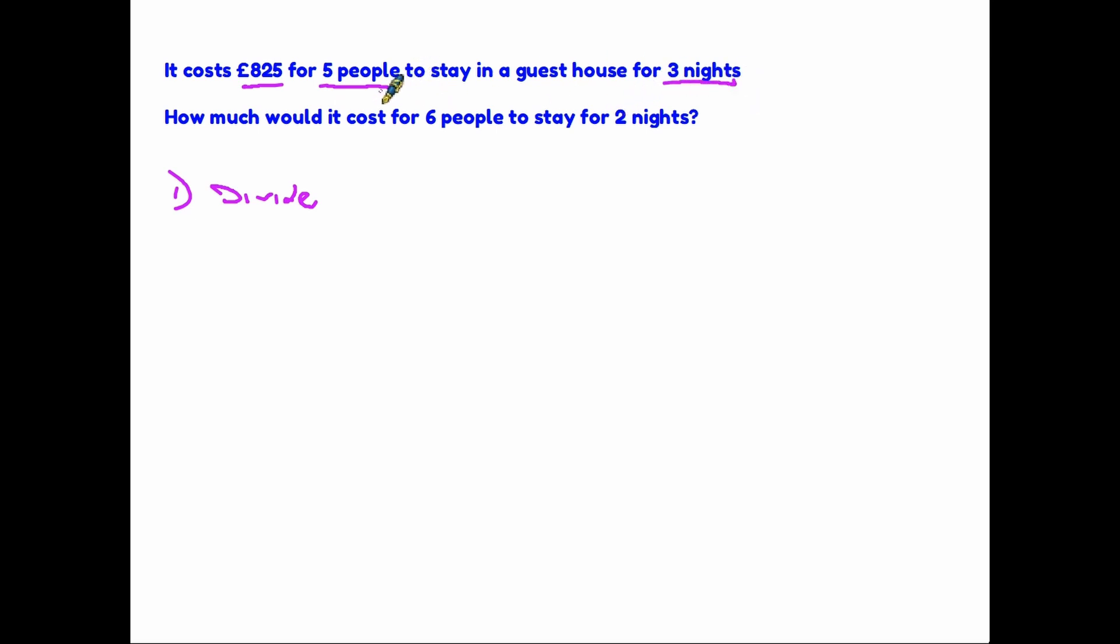But we can apply our two-step rule. Step one was divide to find one. Now, what's this one? Well, the price that we're looking for is how much it would cost one person to stay for one night. If we have a look at this top row here, we have the overall cost. We know that five people are staying for three nights. So effectively, if we multiply five times three, what we have here is a total of 15 nights stay. Five people, three nights each. That means the total bill is for 15 nights. So, the first thing we do is take our 825 and divide that by 15. The answer we get there is £55. Now, that is one person, one night.